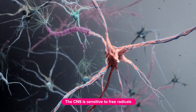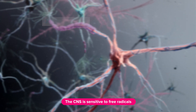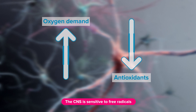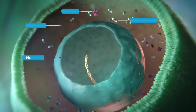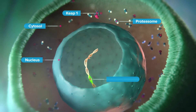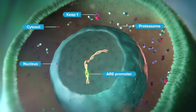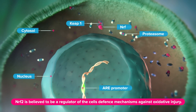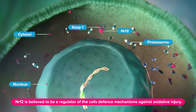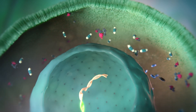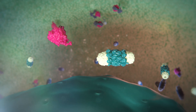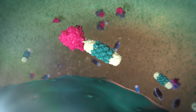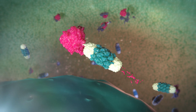The CNS is particularly sensitive to free radicals due to its high oxygen demand and relatively low levels of antioxidants. All cells have defense mechanisms against oxidative injury. The transcription factor NRF2 is believed to be a regulator of these defense mechanisms. When cells are in a quiescent state, NRF2 is retained in the cytosol by Kelch ECH-associating protein 1, KEAP1, and degraded.